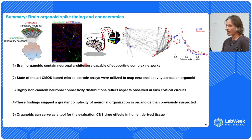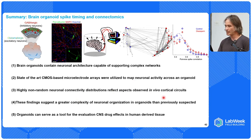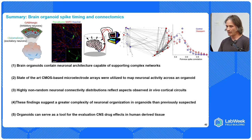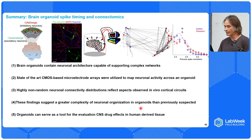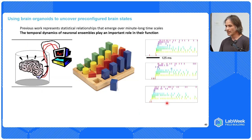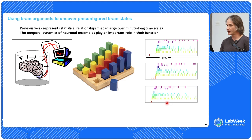In summary of this work: brain organoids contain a neural architecture capable of supporting complex networks. We can use state-of-the-art technology to interface with these structures. The features are highly non-random in nature, and these findings suggest a greater degree of complexity than was previously suspected. Organoids can serve as a tool for the evaluation of CNS drug effects in human-derived tissue. Now, in the remaining time, I'll talk about using brain organoids as a tool to uncover pre-configured brain states.